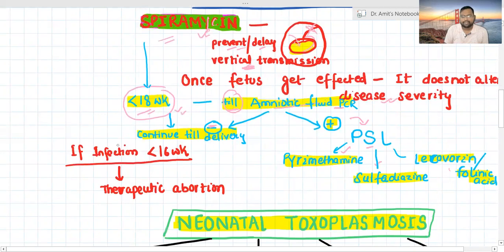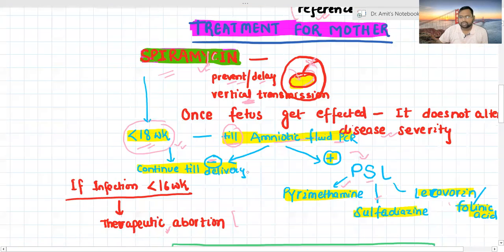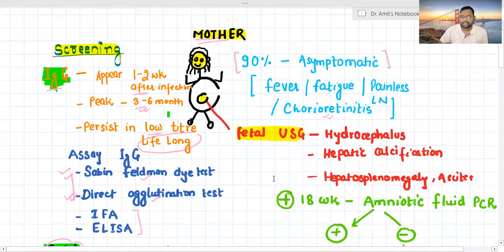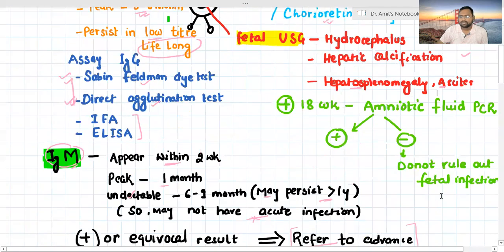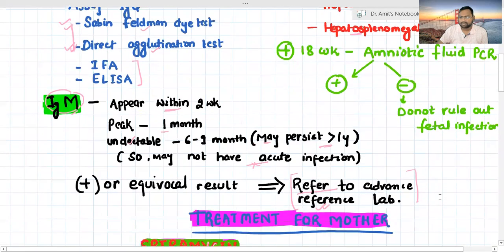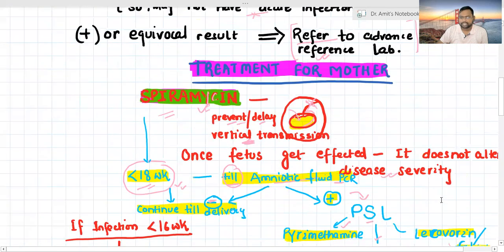If infection is less than 16 weeks, you can advise for therapeutic abortion because there is a risk, or if there is severe damage in ultrasound. If you go for fetal ultrasonography, you may get hydrocephalus, hepatic calcification, hepatosplenomegaly, or ascites. You have to go for 18-week amniotic fluid PCR. This is about the mother.